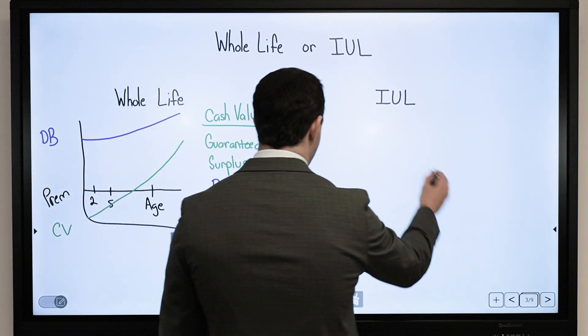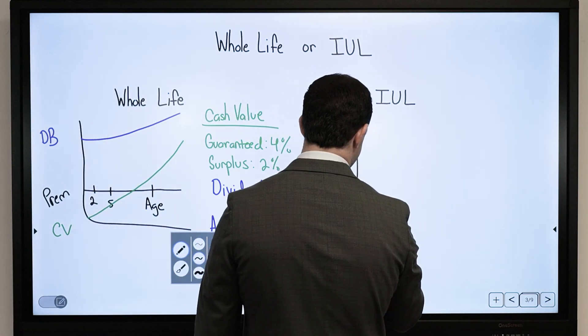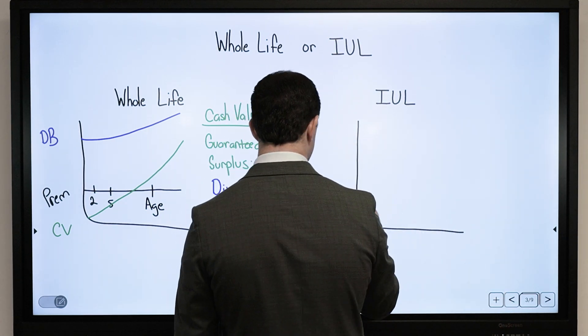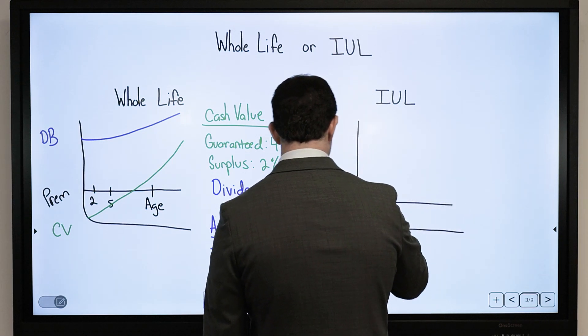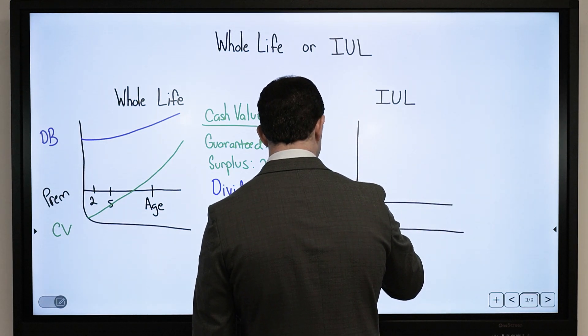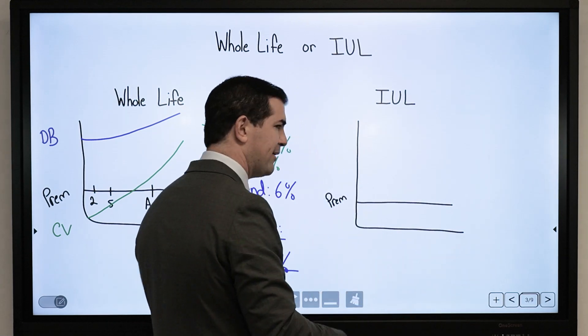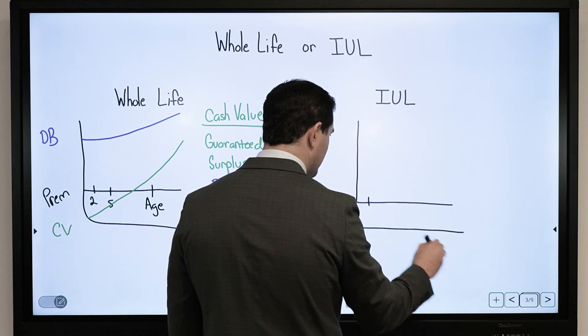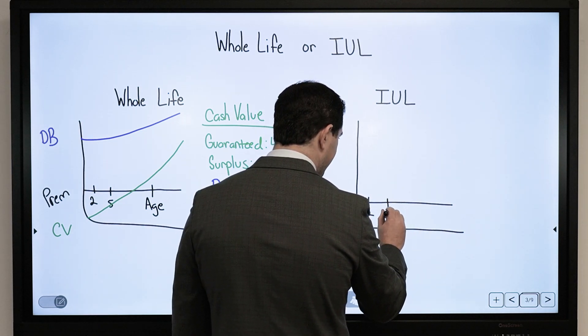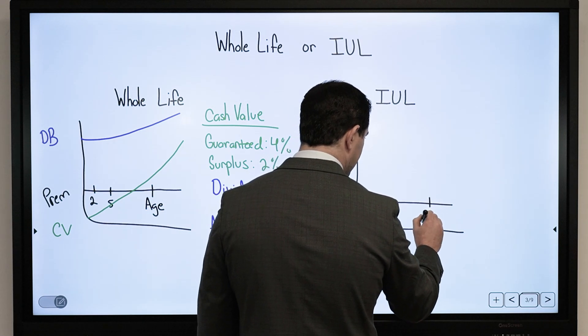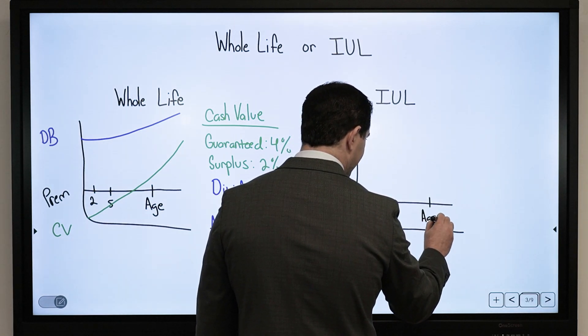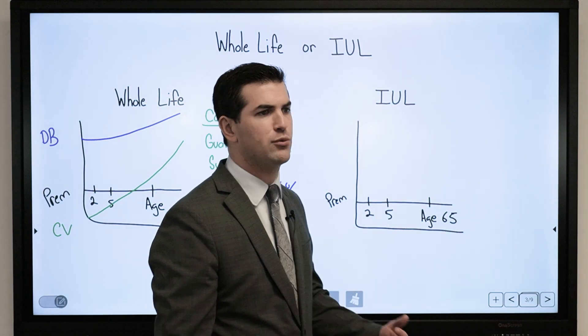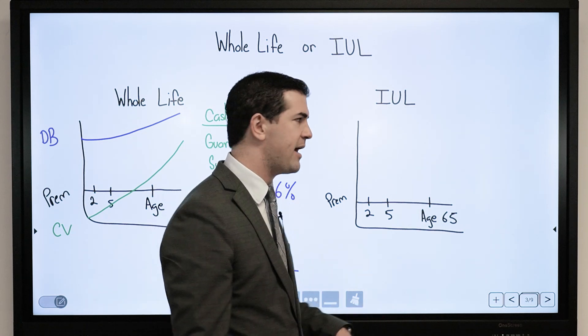An IUL, 9 out of 10 times, will offer more potential than a whole life insurance product. Very similar in the sense that you have a premium that is level for the life of the policy. Like whole life, you do not have to pay into it for your whole life. You can design it to overfund in a short period of time. Where these products offer the most potential aside from growth is typically on the distribution side when we start to take out income.